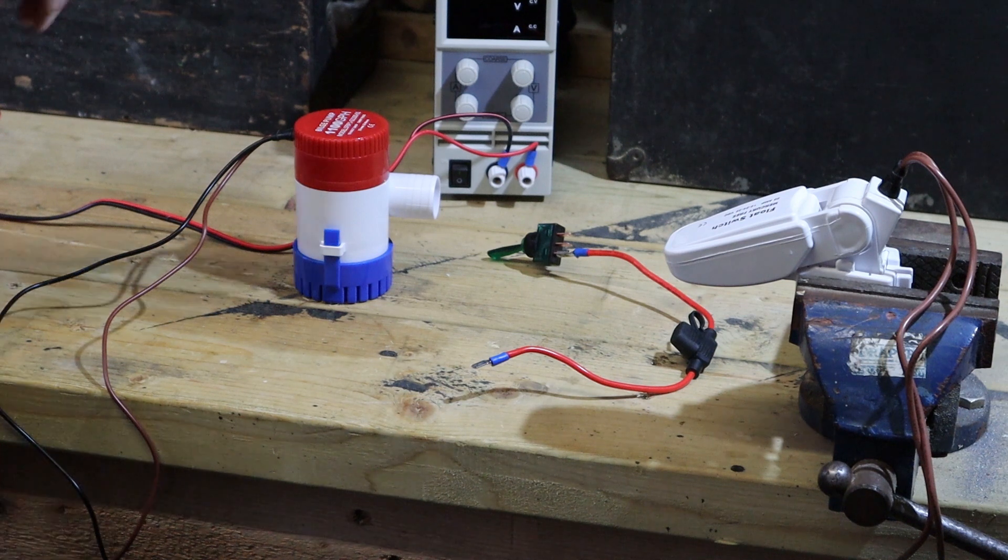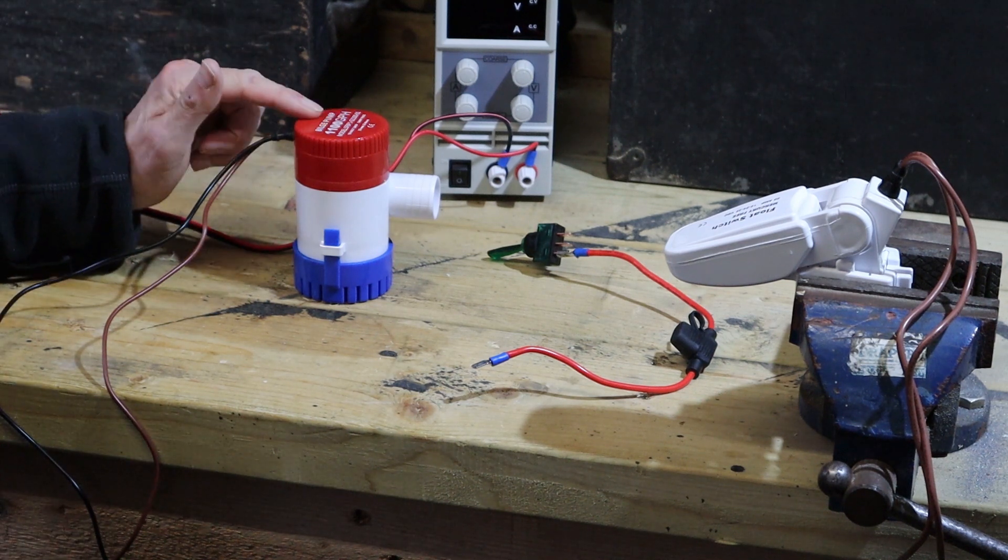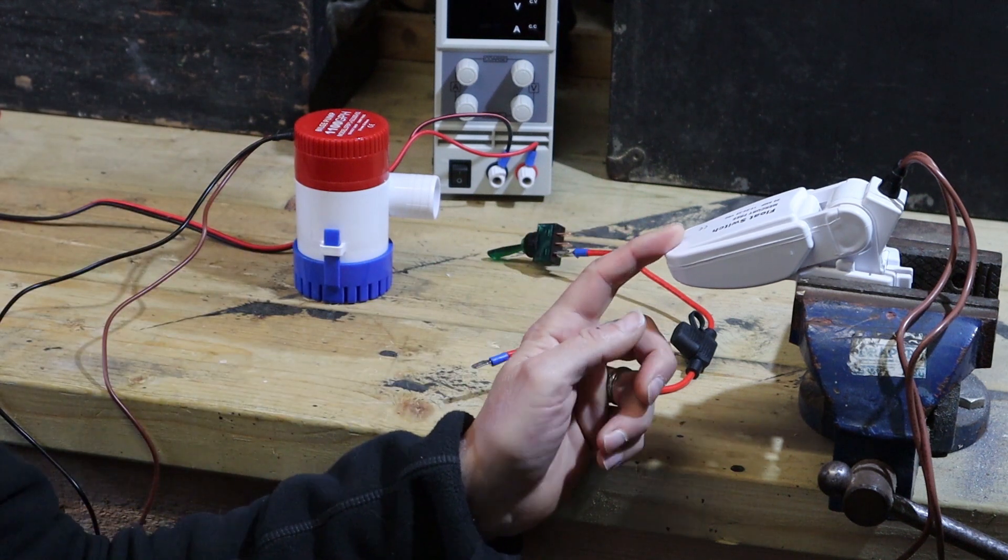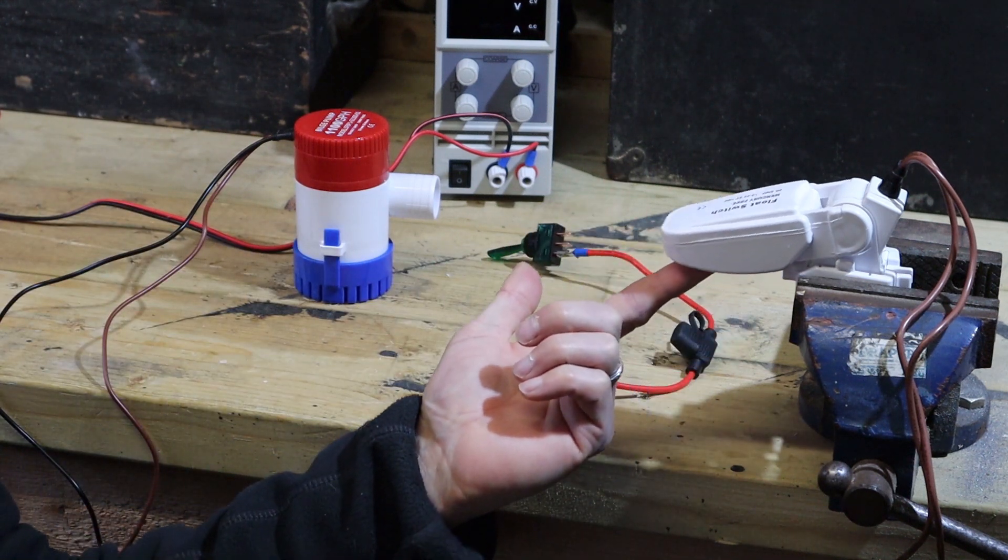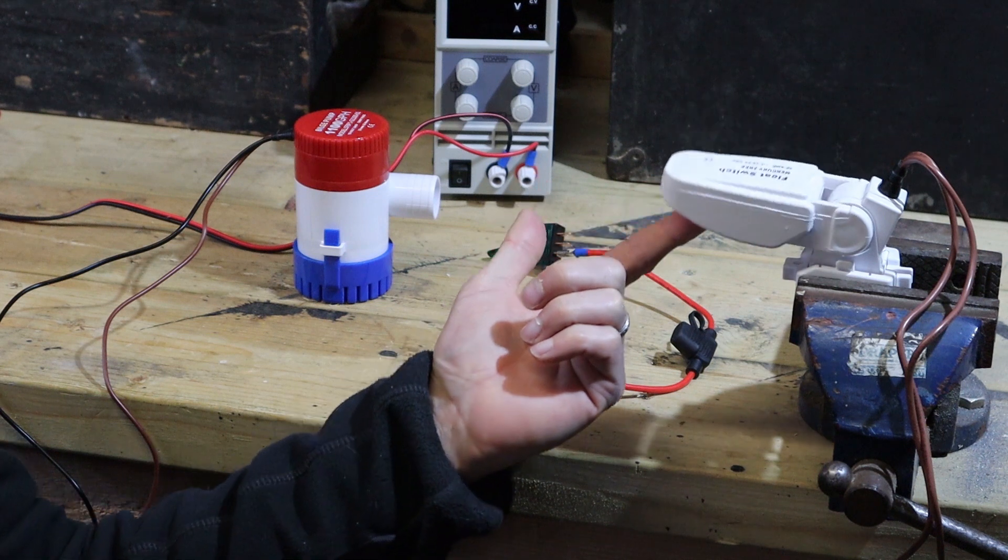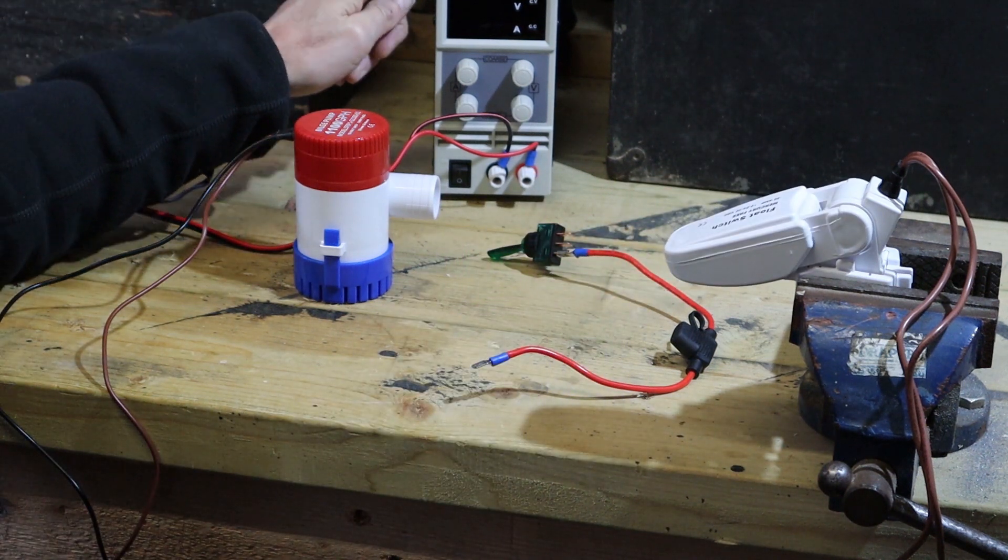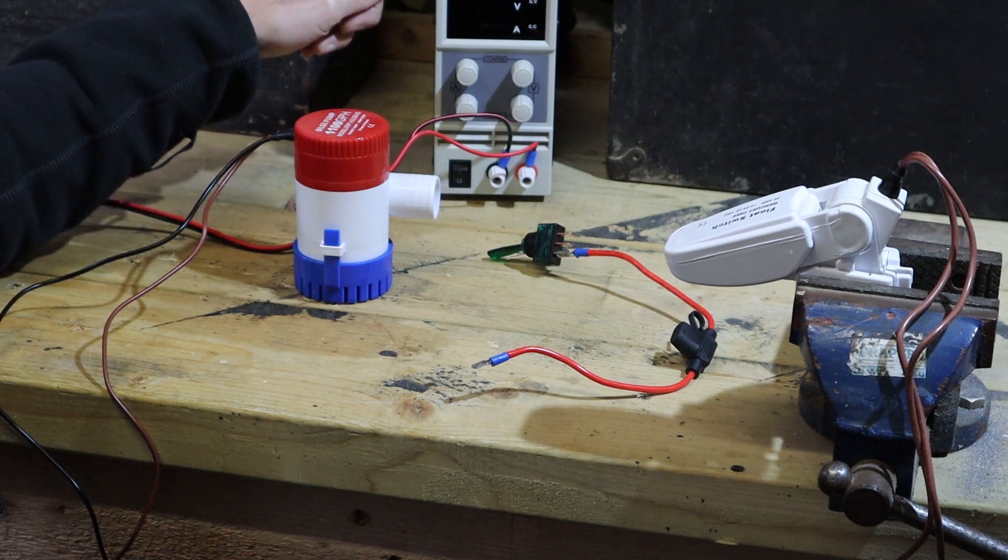Okay, so what we've got is the bilge pump which is specified as needing a 5 amp fuse, the float switch which will activate with rising water level, and the power supply representing the 12 volt boat electrics.